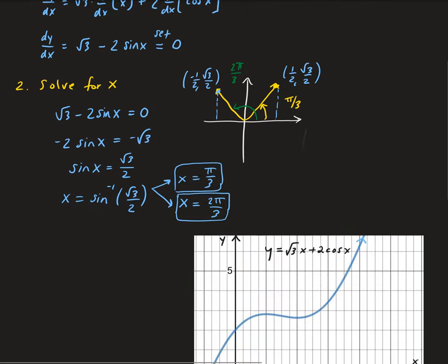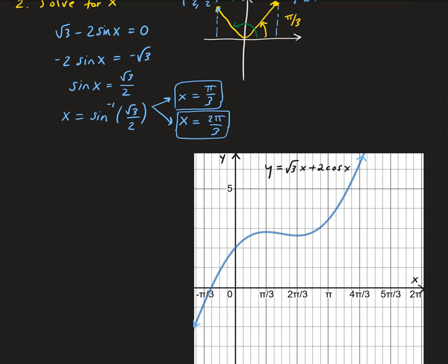You can see these solutions on the graph — we get a horizontal tangent line at π/3, and the other one is at 2π/3, which is about right here. Those are the two horizontal tangent lines, located at π/3 and 2π/3.